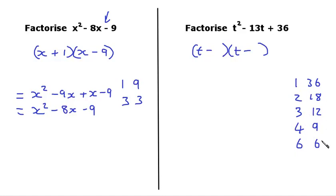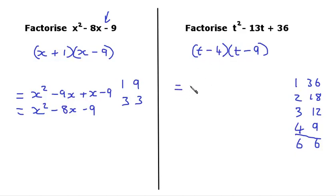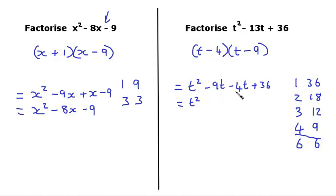We need to choose one of these pairs that is going to add to make 13, because we're going to have a negative something and a negative something, so we add them together. Well, 4 plus 9 is 13, so 4 and 9 will fit. We put 4 in one bracket and 9 in the other — it doesn't matter which way round because both signs are negative. Checking by multiplying out: t times t is t squared, t times minus 9 is minus 9t, minus 4 times t is minus 4t, and minus 4 times minus 9 is positive 36. Simplified: t squared minus 13t plus 36.